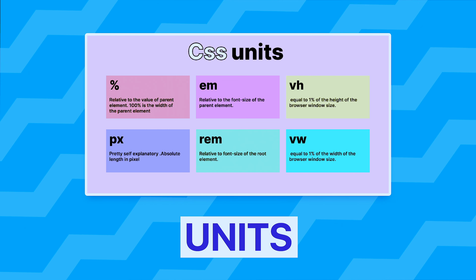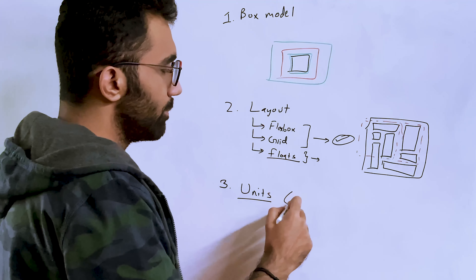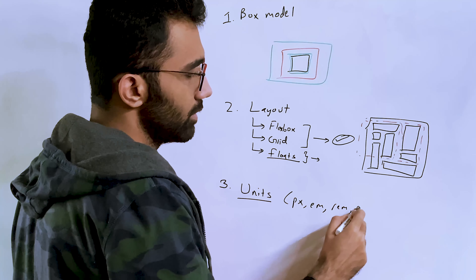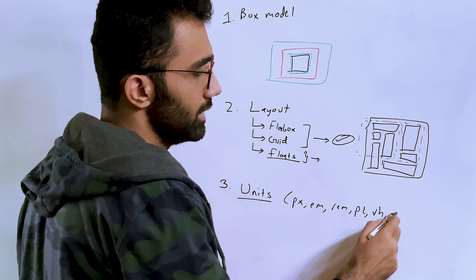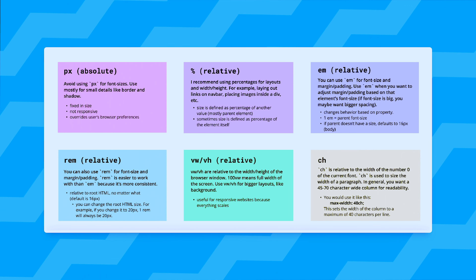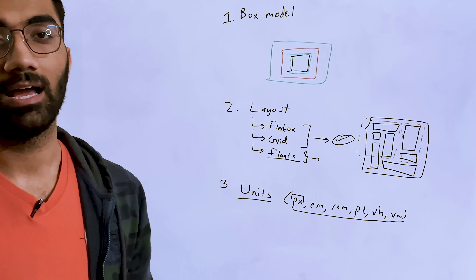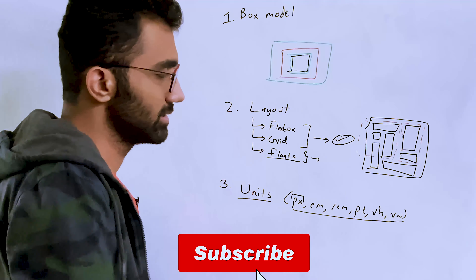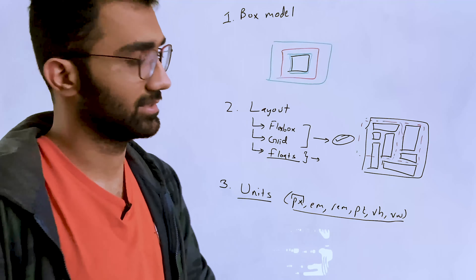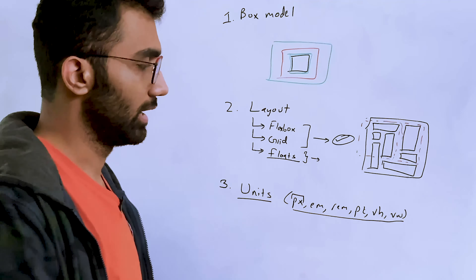The third thing I'd recommend is understanding CSS units. A lot of people get confused between pixels, em, rem, vh, vw, and other newer units. Understand what a pixel truly means and how it differs on various screens — for example, on a retina iPad. This is slightly advanced, but a person who really knows CSS knows a lot about units: how rem works, how rem in conjunction with em or pixel works, and all sorts of nuances around how units operate.